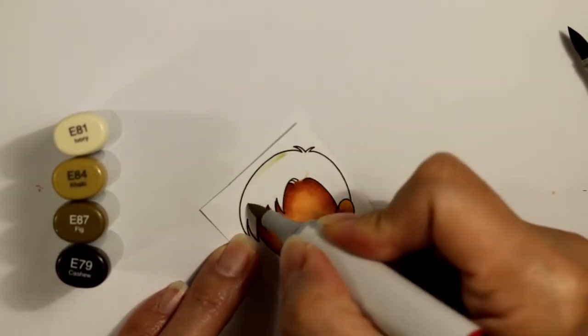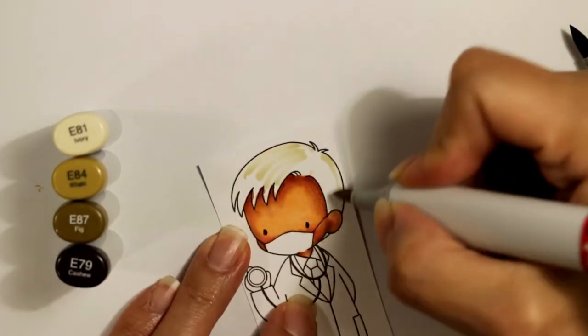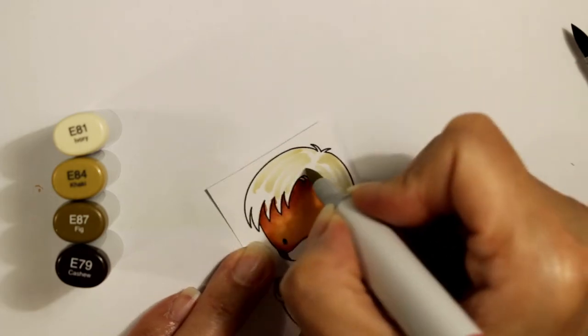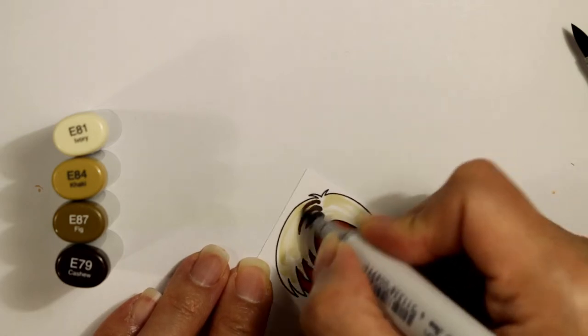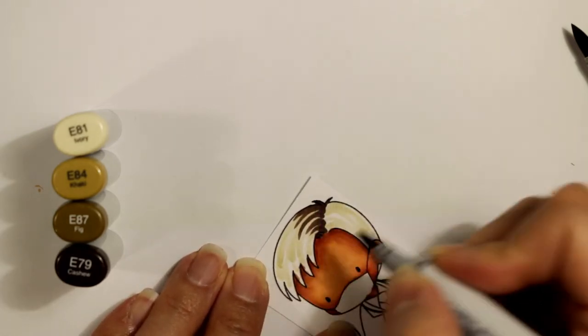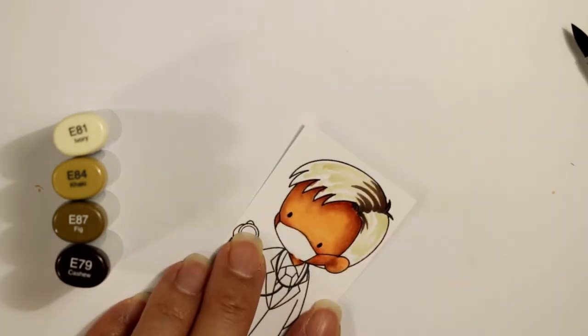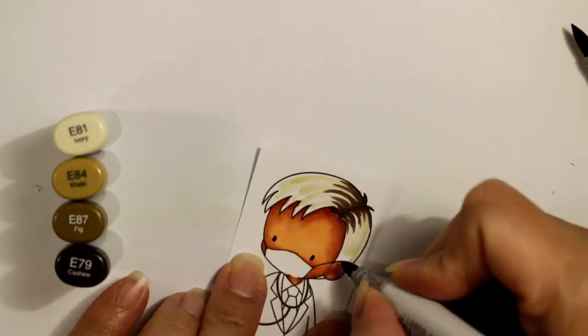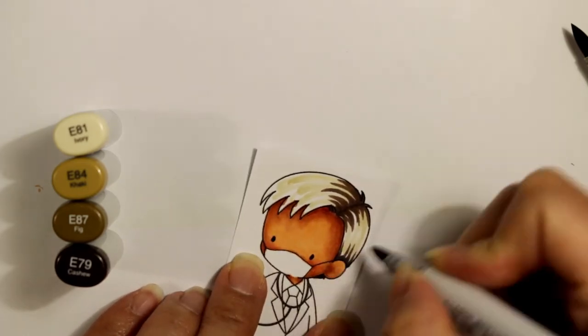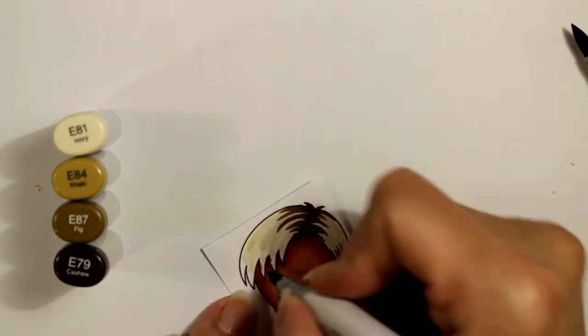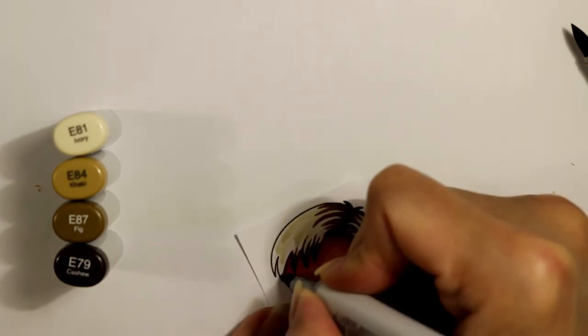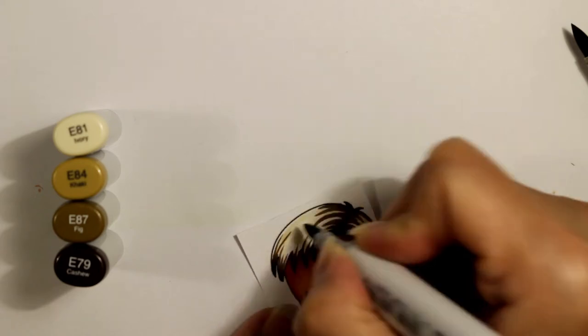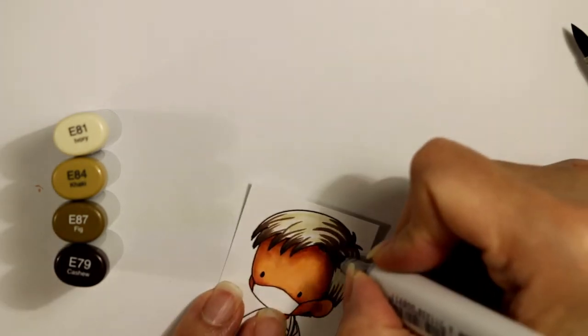And now for his hair, I thought I'd give him kind of an ashy brunette coloring. So it's a color combination that I've never used before, but that's part of the fun of Copic coloring. You can just kind of look at your stash of marker colors and see which ones would go together. So I did an E81 for the lightest highlights. Then for the darker areas, I'm using an E87 and an E79. That 79 is super dark, like an espresso color.